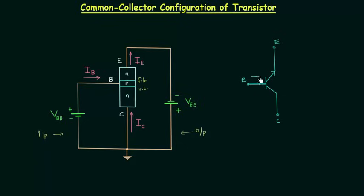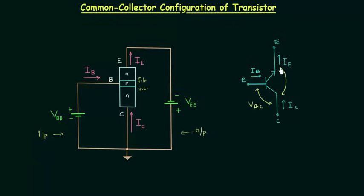This current is the base current IB. This current is the emitter current IE. And this current is the collector current IC. The input voltage is VBC, and the output voltage is VCE. VCE is equal to VBE plus VBC.